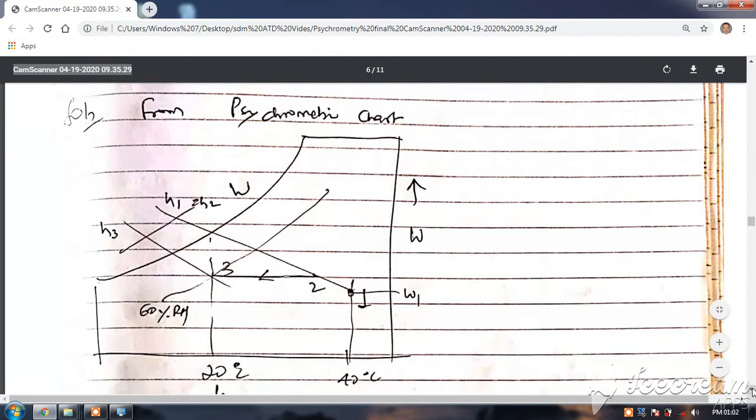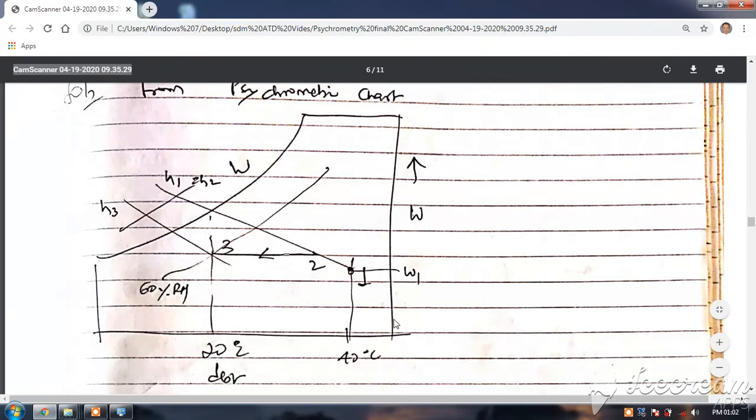I will show you again. Now here you can see the psychrometric chart. Condition 1: 40 degrees centigrade, this is omega 1. 40 degrees centigrade and 20 degrees WBT, so WBT means 20 degrees I will take here.